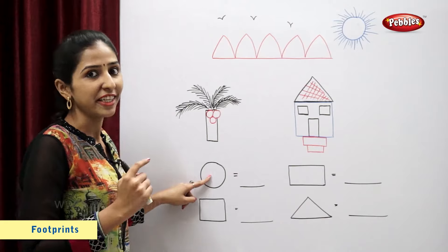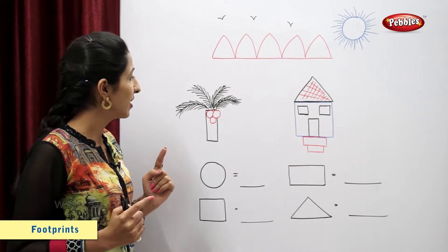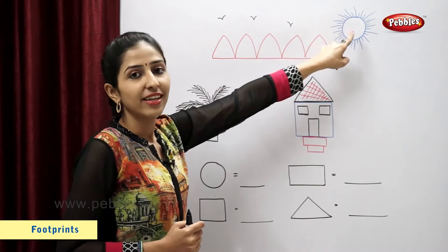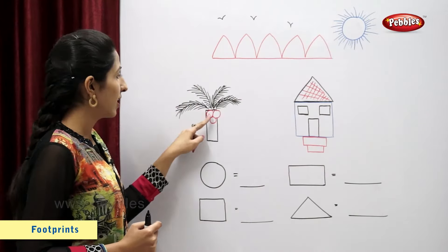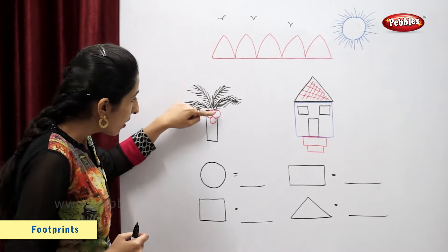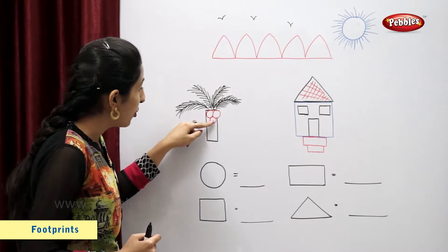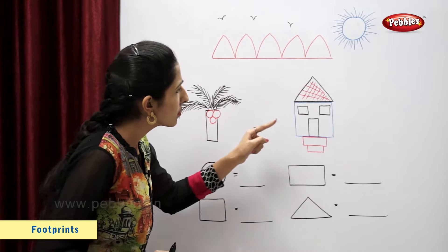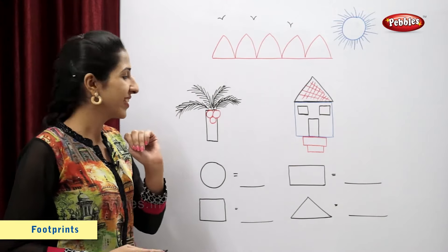Circle. Let's count the number of circles. One, two, three, four. So there are four circles.